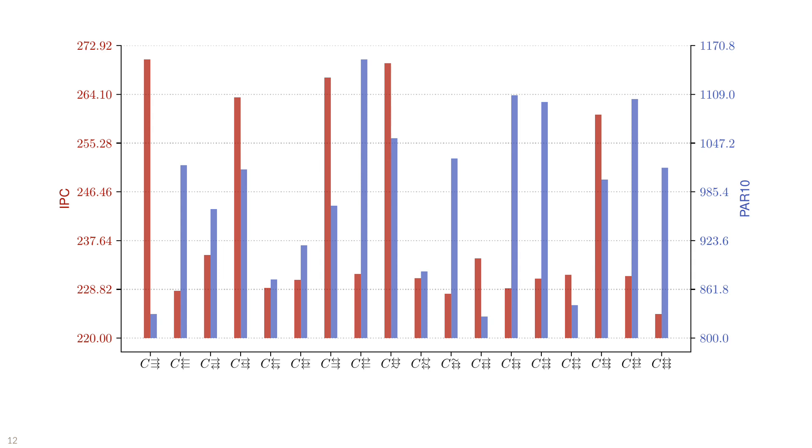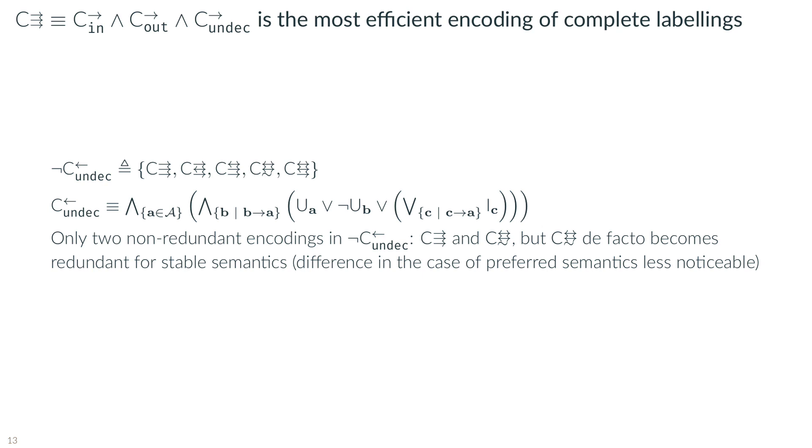and this when considering the 2017 argumentation computation benchmarks. In red, the IPC score, the higher the better. In blue, the PAR-two score, the lower the better. In here, we can see that among the various sets of constraints, the first two are the minimal ones but there is a substantial difference in performance between them.